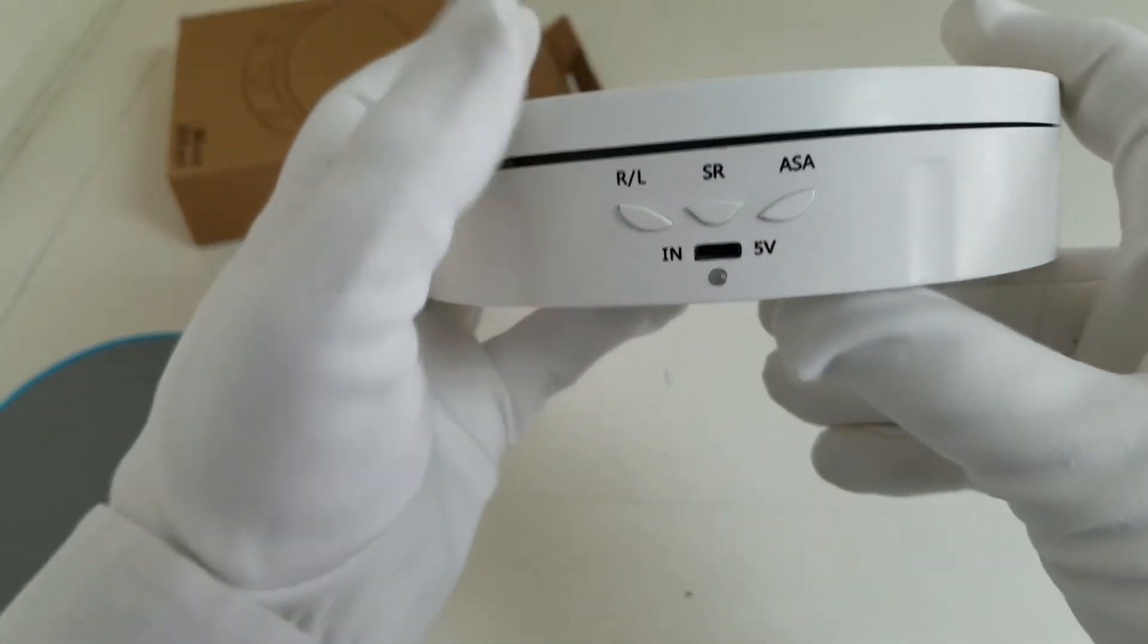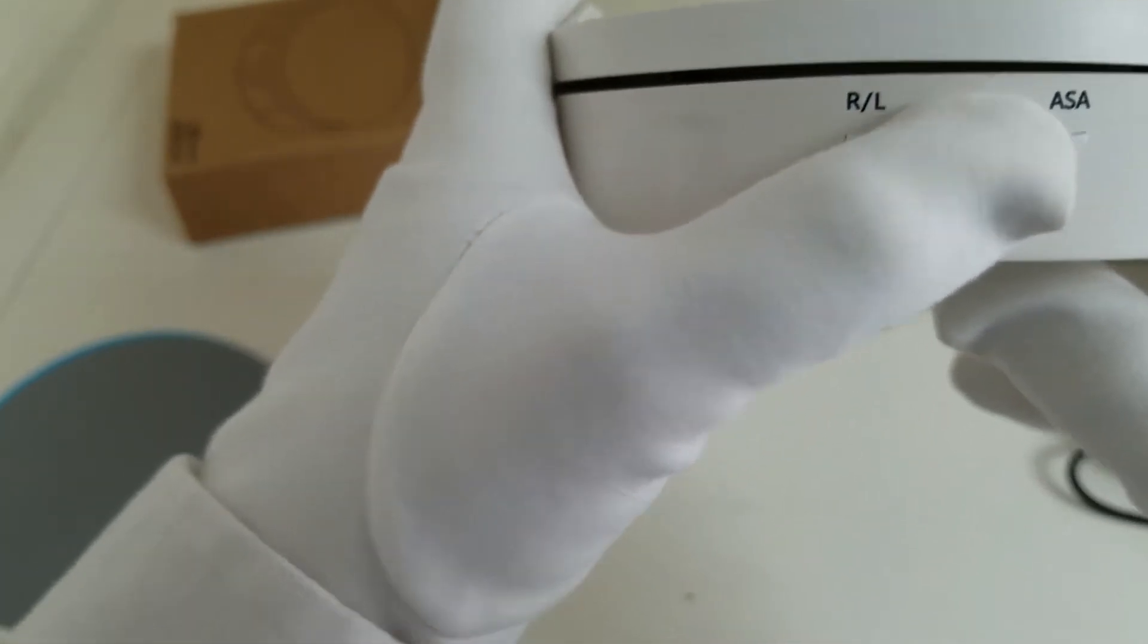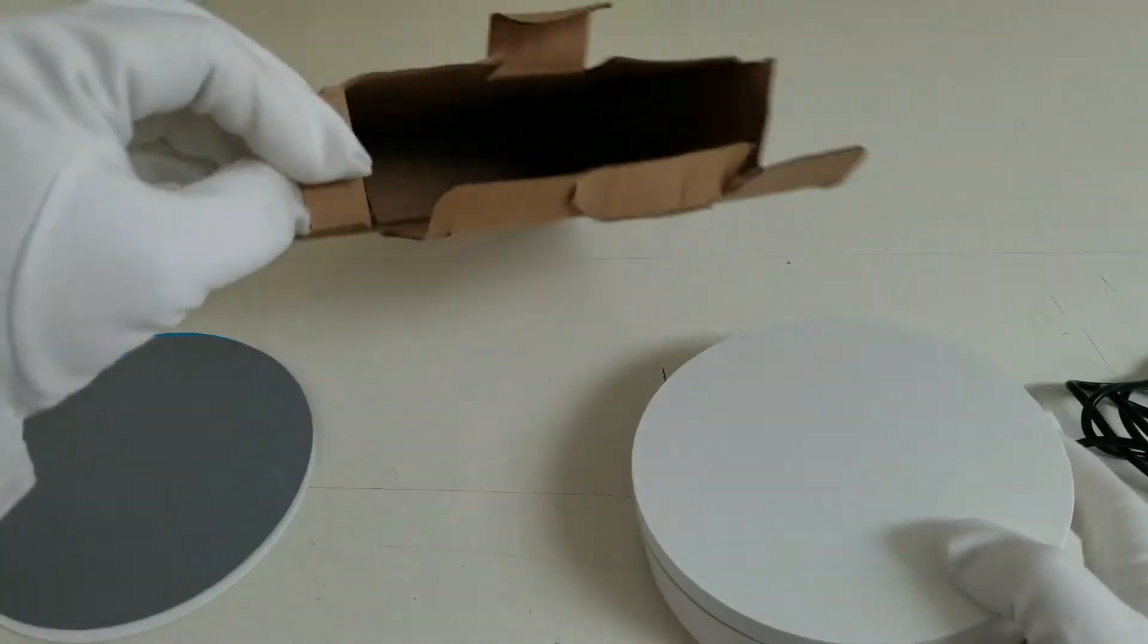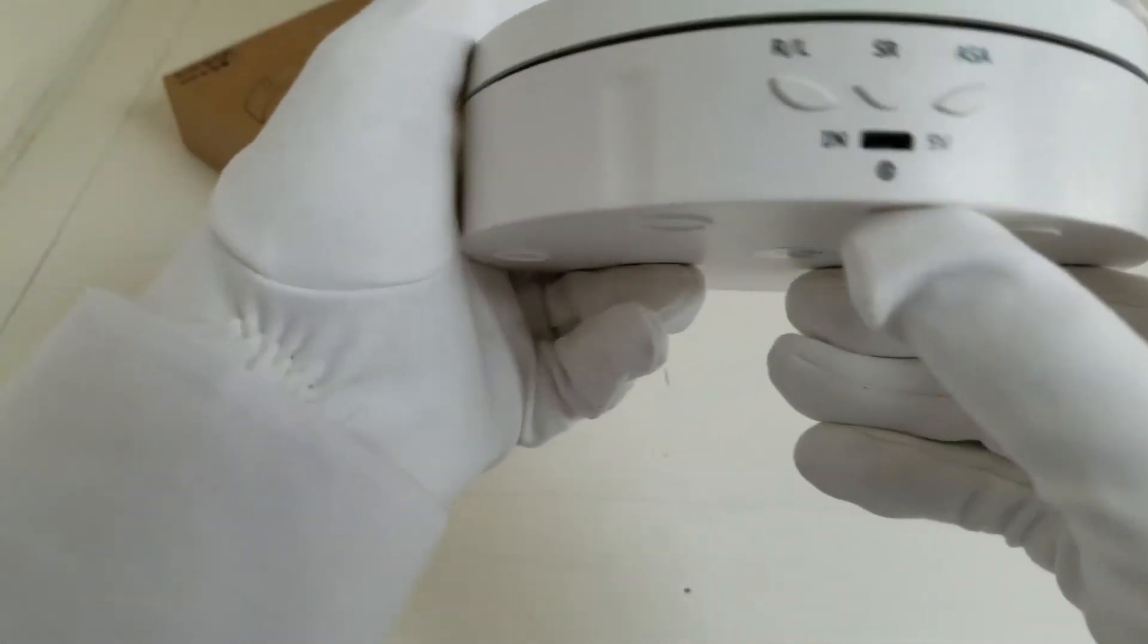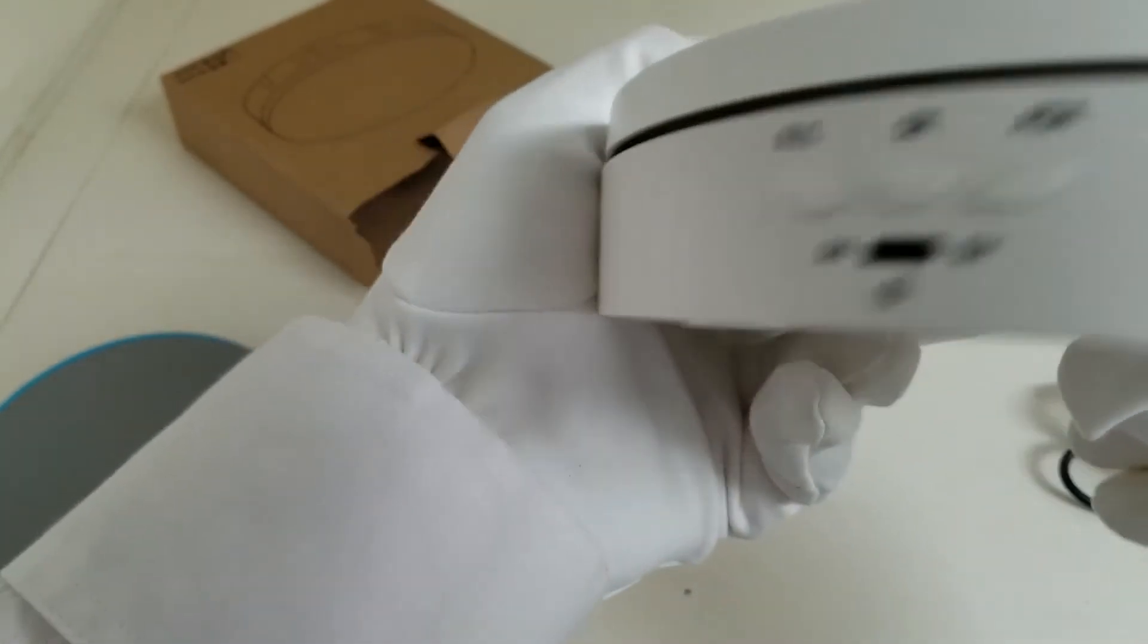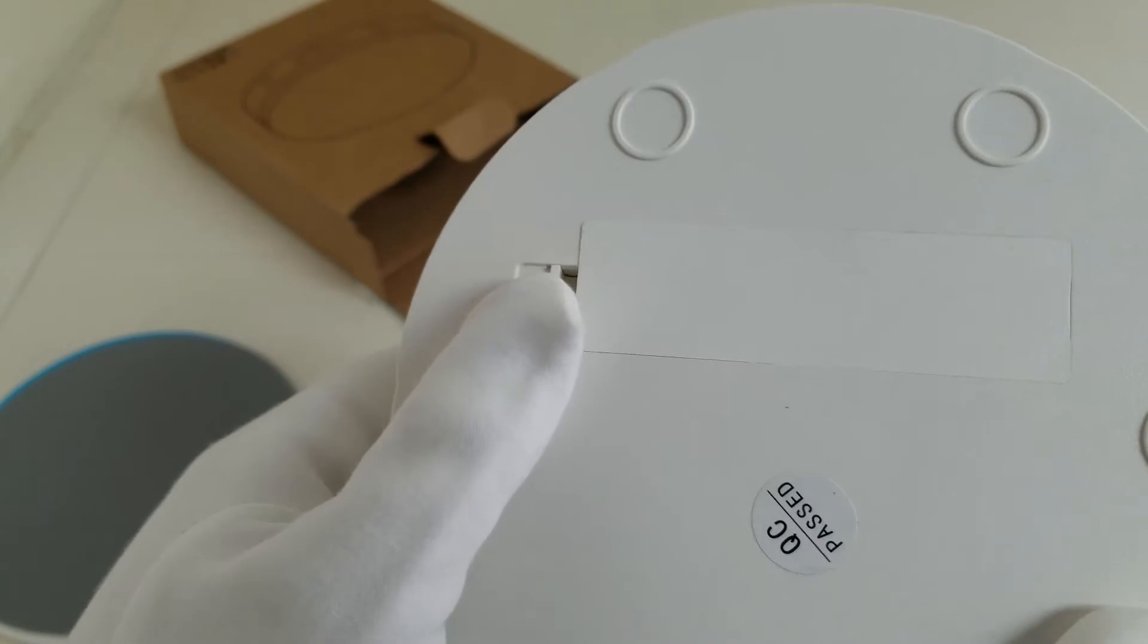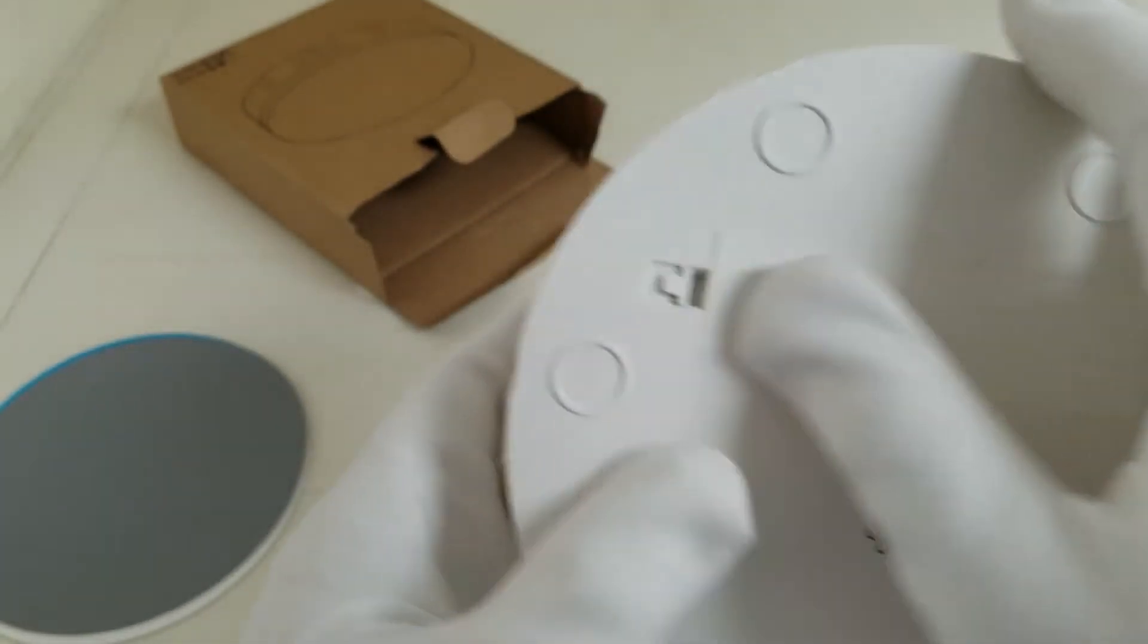We have left and right buttons here, and SR and ASA buttons. Not really sure what they do. I wish there was a manual, but we'll figure it out. You put the micro USB in here to power it up, 5 volt I guess. On the bottom there's not much, but it looks like there's a battery compartment here.